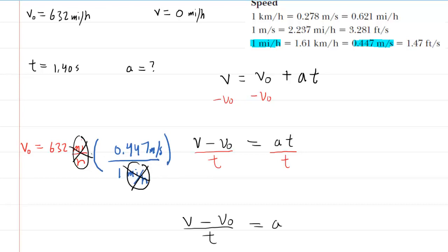So effectively, what you're going to do is take that 632 and multiply it by the 0.447. And when you do that, you will find that the initial velocity is 282.5 meters per second, approximately.